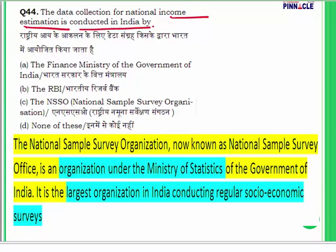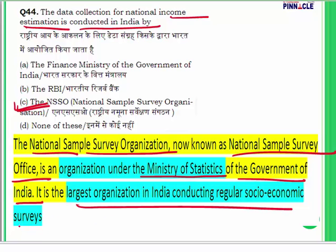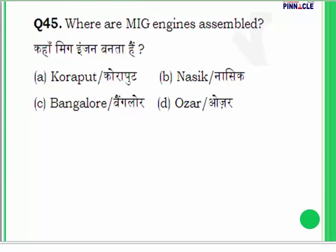Question 44: The data collected for national income estimation is conducted in India by whom? The answer is the National Sample Survey Organization, now better known as the National Sample Survey Office (NSSO). The answer is C. It is an organization under the Ministry of Statistics of the Government of India and is the largest organization in India conducting regular socio-economic surveys.